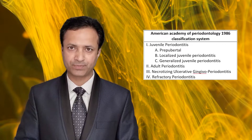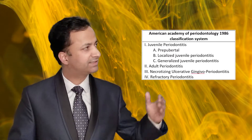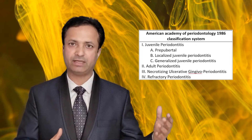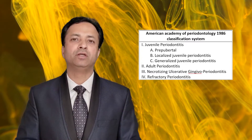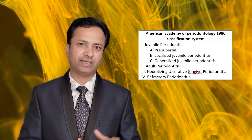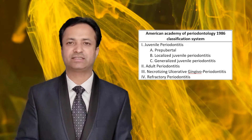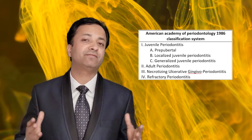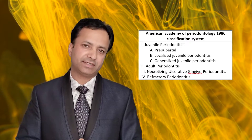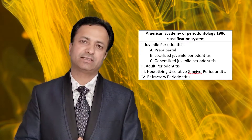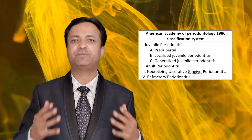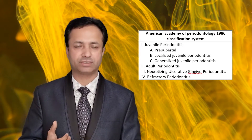In the AAP 1986 classification system, many disease entities are the same as those given by Page and Schroeder. One new condition added was refractory periodontitis — cases in which appropriate therapy, both surgical and non-surgical, has been given and yet the disease is still progressing.